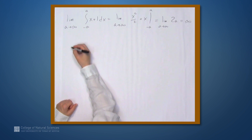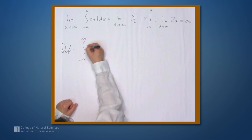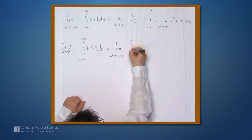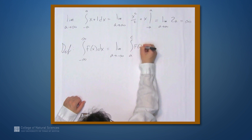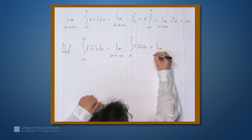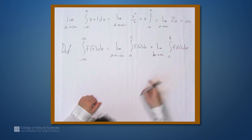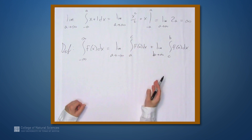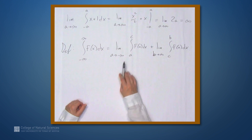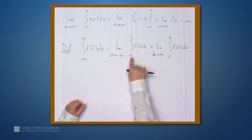So our definition of an integral from negative infinity to infinity as the limit of the integral from negative a to a doesn't work, and we have to try something else. We're going to use the following definition: the integral from negative infinity to infinity of f of x dx is, by definition, the limit as a approaches negative infinity of the integral from a to c of f of x dx, plus the limit as b approaches infinity of the integral from c to b of f of x dx. Here c can be any number we want — often 0 is convenient. Essentially we're splitting this into two different improper integrals.